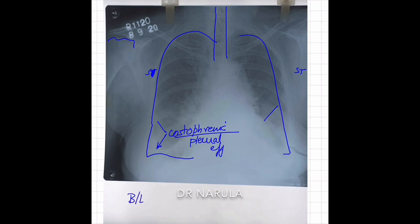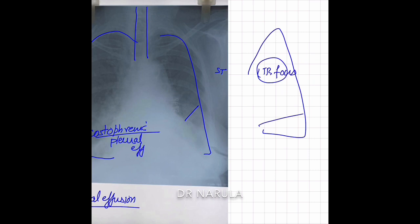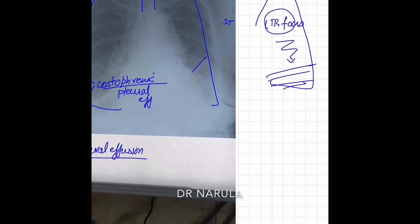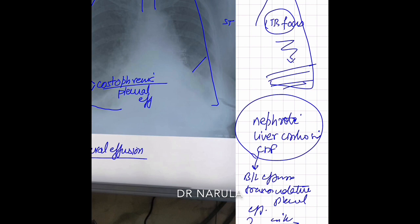It is a bilateral pleural effusion. Bilateral effusion is something which is systemic. For example, if there was a focus of TB, the effusion would be only on the side where the TB focus was. But conditions like nephrotic syndrome, liver cirrhosis, or congestive heart failure cause bilateral pleural effusions — transudative pleural effusions — which is checked by Light's criteria.